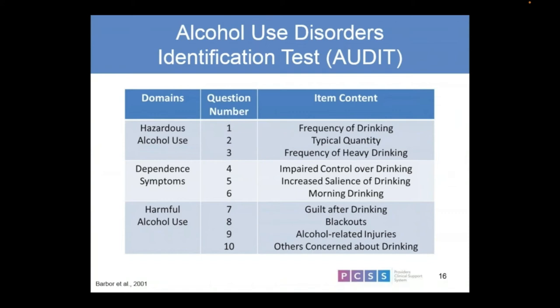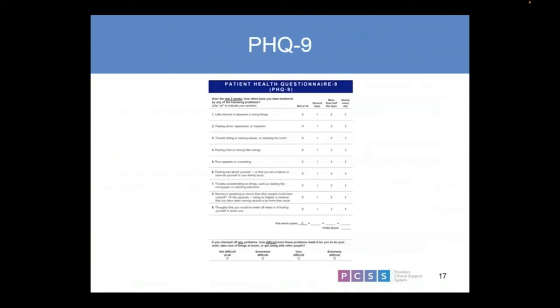The AUDIT is a scale for alcohol use with 10 questions — not very long or laborious, but it can definitely start picking out at-risk patterns and not just dependent drinkers. Seriously think about using the AUDIT rather than just the CAGE. The PHQ-9 — the Patient Health Questionnaire-9 — assesses where folks are with regards to depression. Getting a sense of whether depression preceded or followed substance use — chicken or egg — is important.